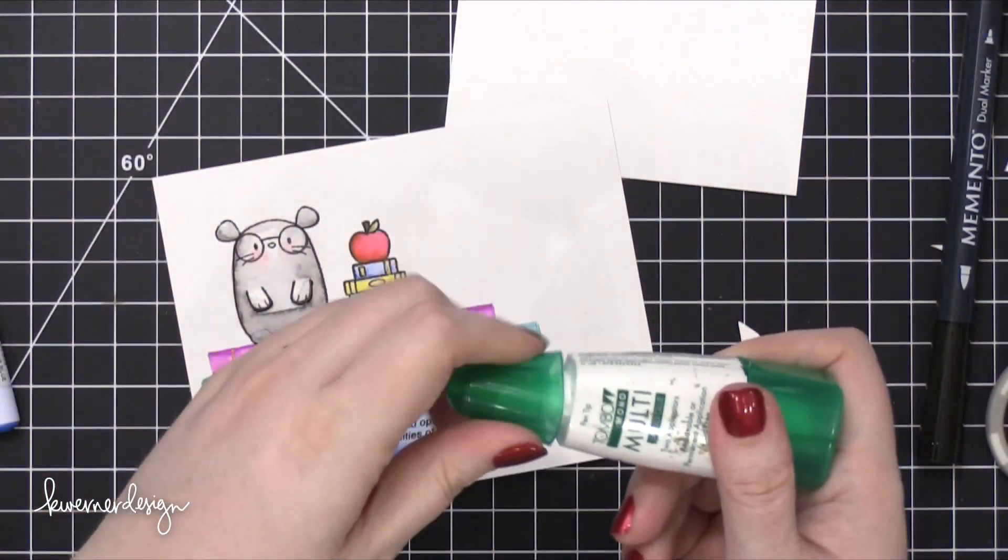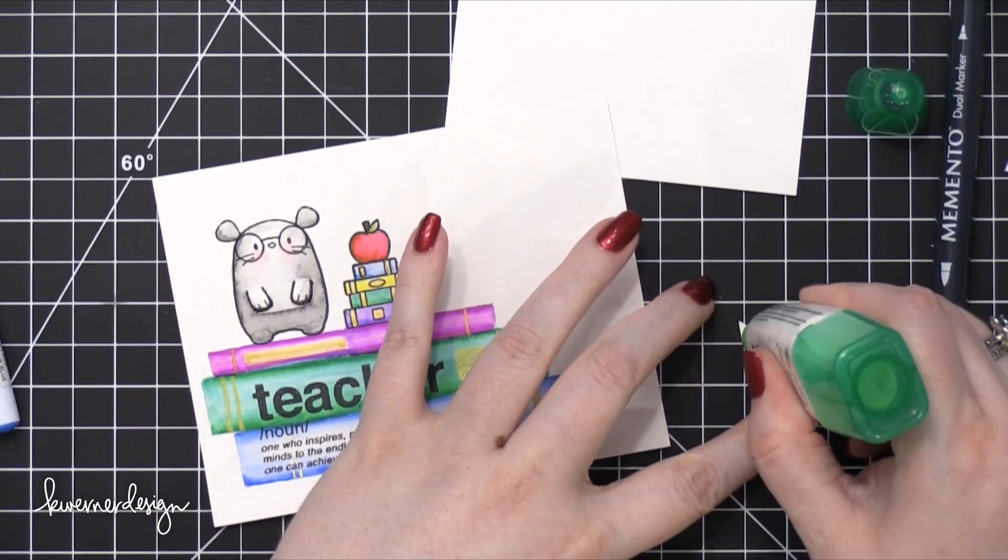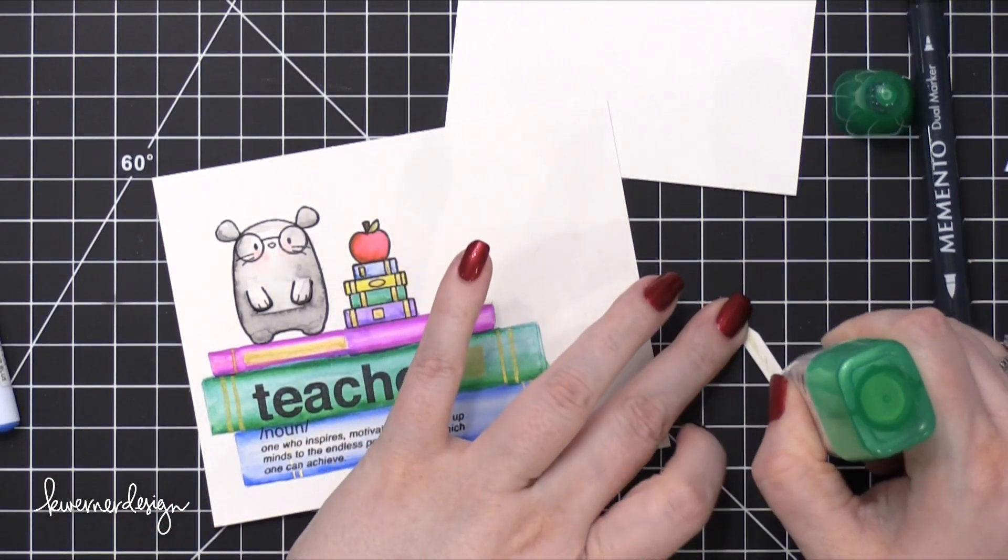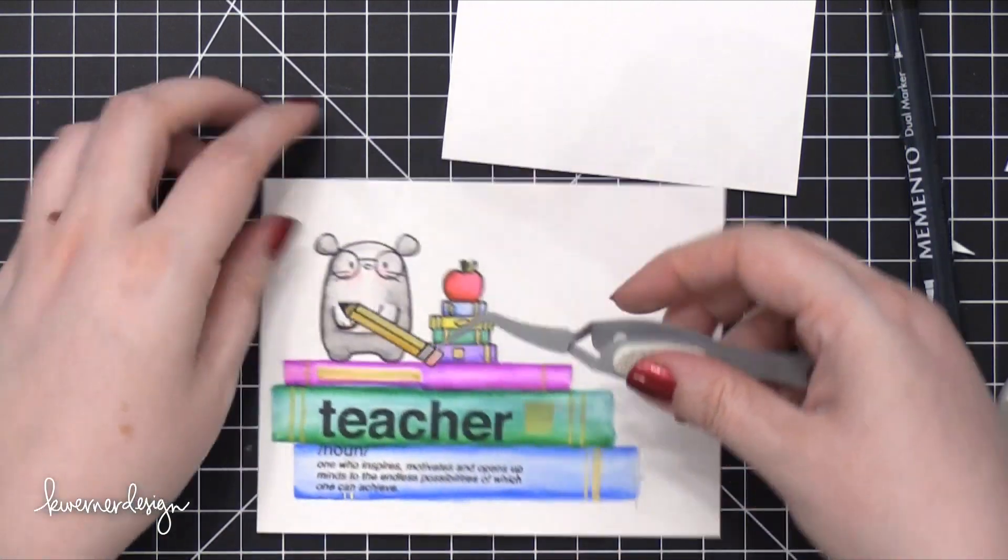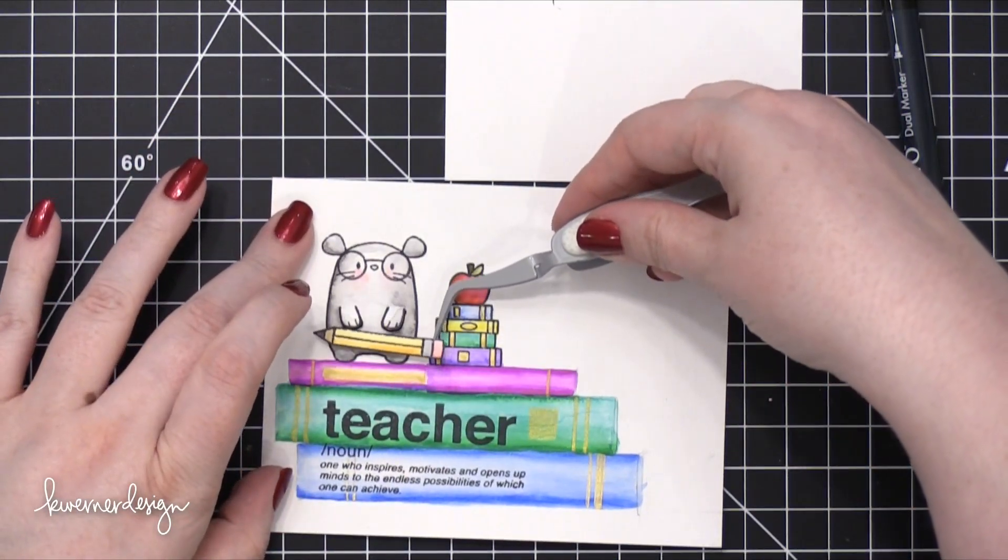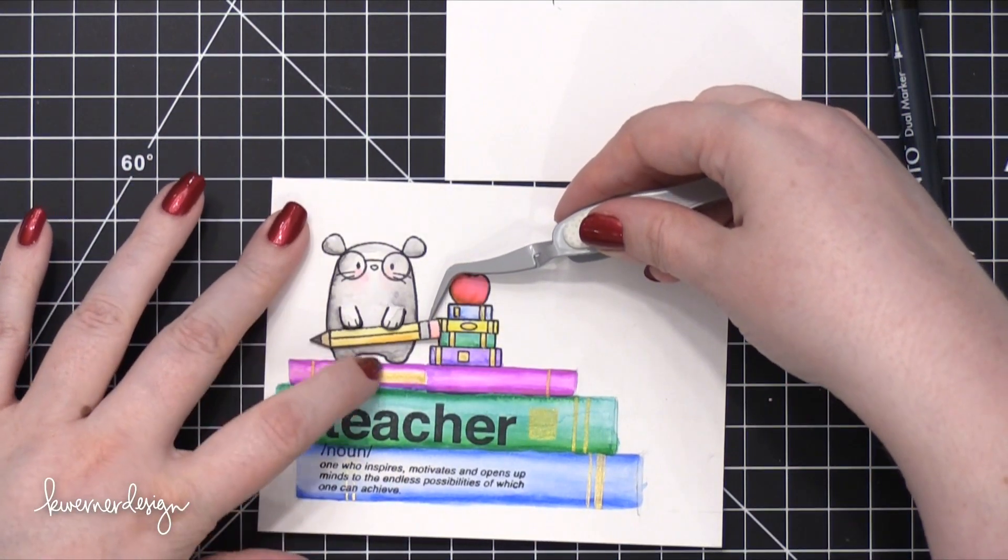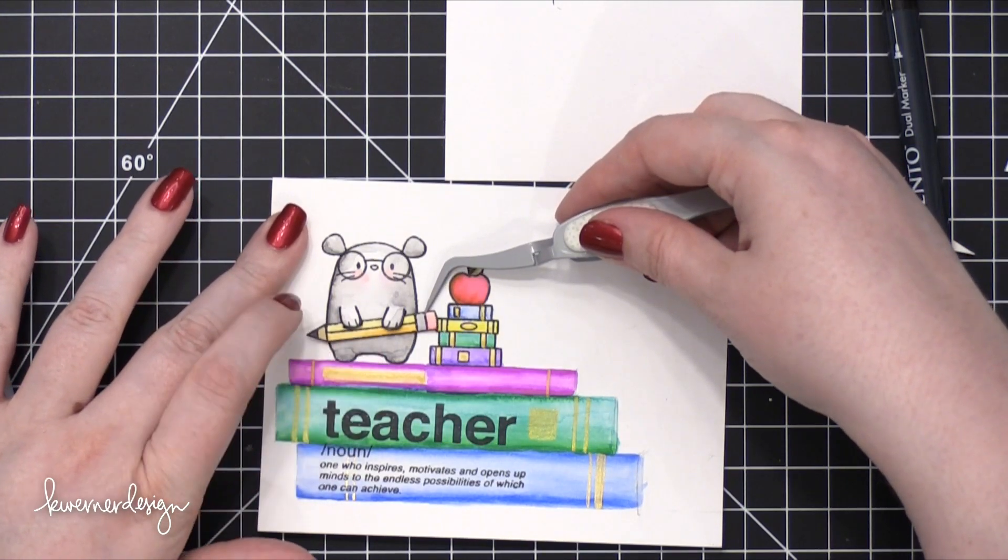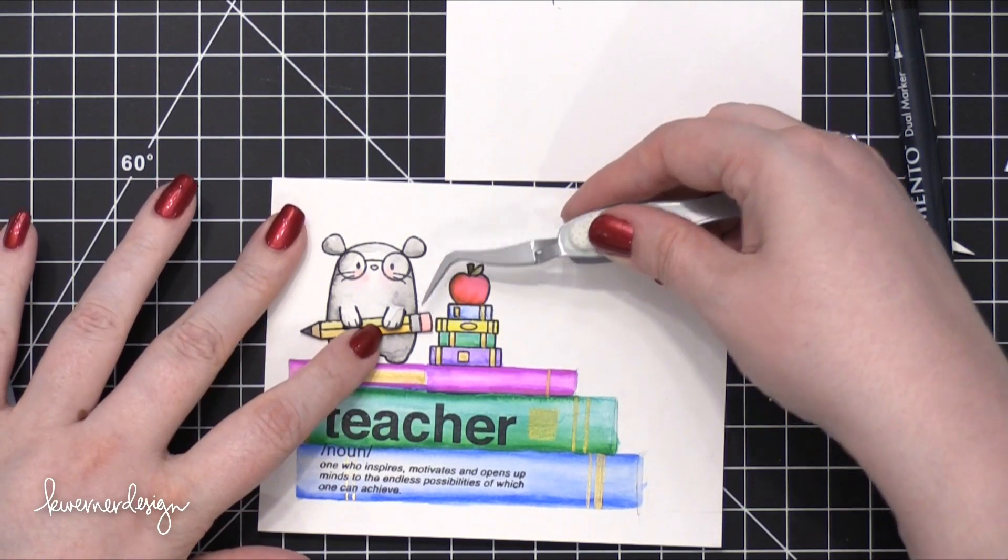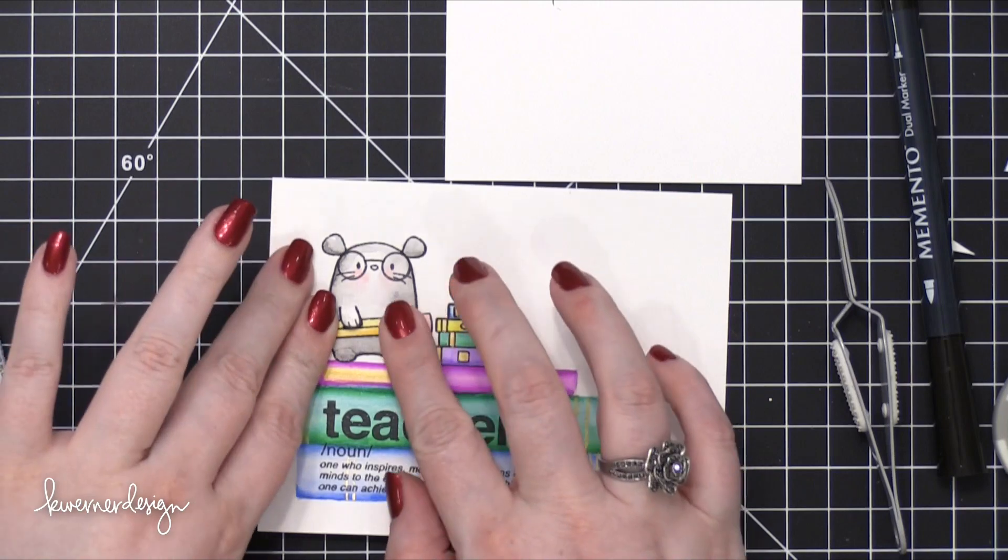So in order to put that together, I used some Tombow Mono Multi Glue and just applied that to the back of the pencil, and then I used some tweezers to hold that pencil in place while I put it into the right spot. So I just slid it over just a little bit more to the left so that it wasn't overlapping the small stack of books.